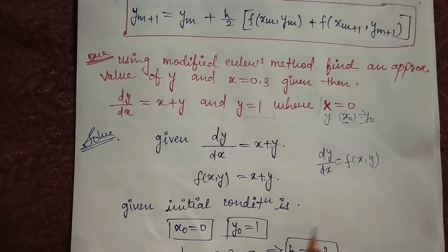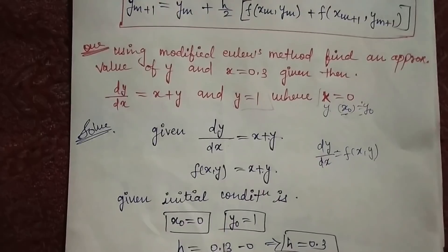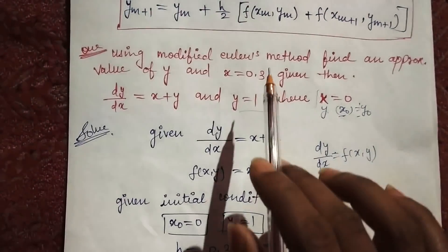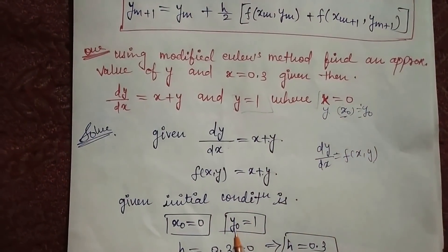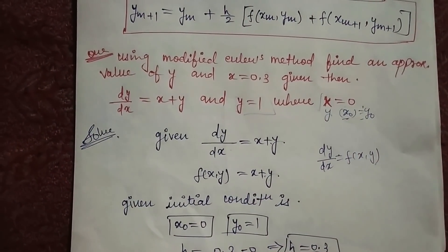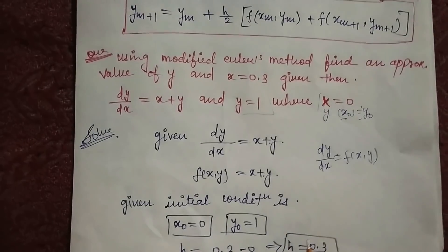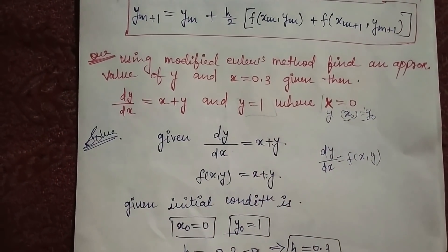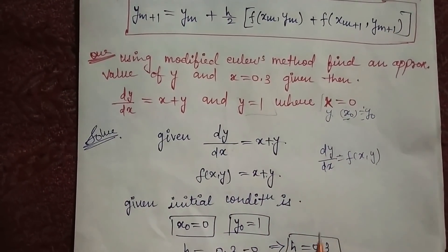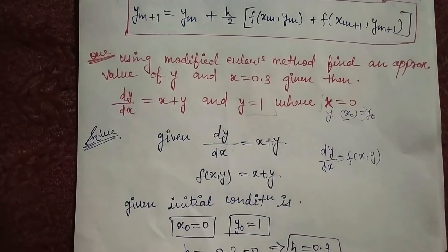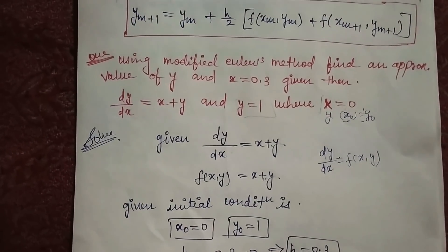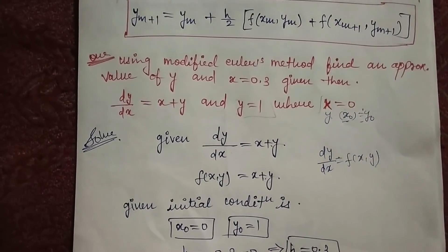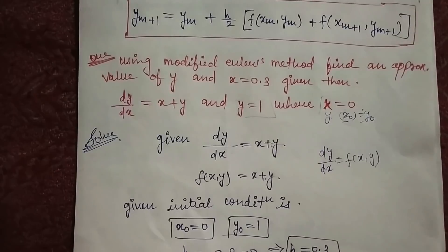Now we have to find h. The formula is: take the given x value and subtract the initial condition. So h = 0.3 minus 0, which gives h = 0.3. Now what do we have to do in the next rule? We have to find y1.